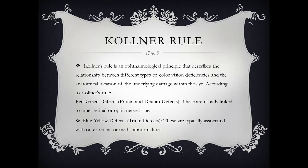It is very important to know why inner retinal or optic nerve issues are related to the red-green defect. The reason is that the L cones and M cones — the long wavelength and medium wavelength cones — are present in the center of the fovea and are directly linked to the optic nerve. They are not in the outer retina, so whenever there is pathology within the optic nerve or inner retina, the patient has difficulty differentiating between red and green colors.